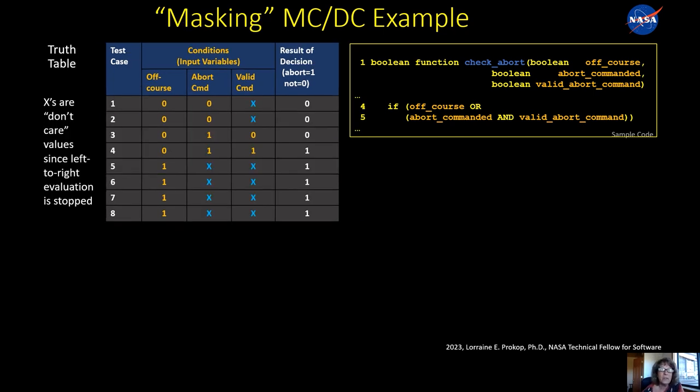The next form of MCDC is called masking. And you can see I have a kind of a similar slide up, but the truth table has changed. So what is this masking form and what's going on in the truth table? The X's in the truth table are what's called don't care variables. Because when computers generally evaluate this expression, they'll go through it from left to right, and they'll stop as soon as the decision can be made. And that's called short circuiting. So in this case, off_course, if that's true, you don't have to continue on to evaluate the other two, you can just flag the abort and exit the function.